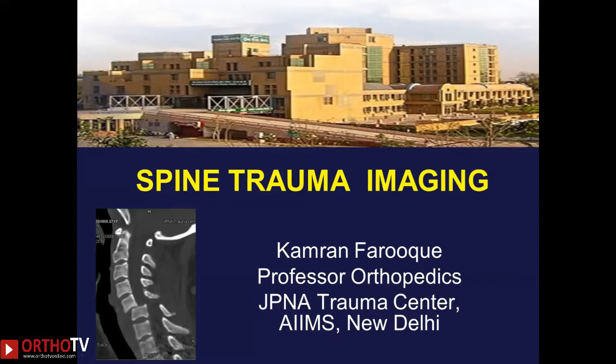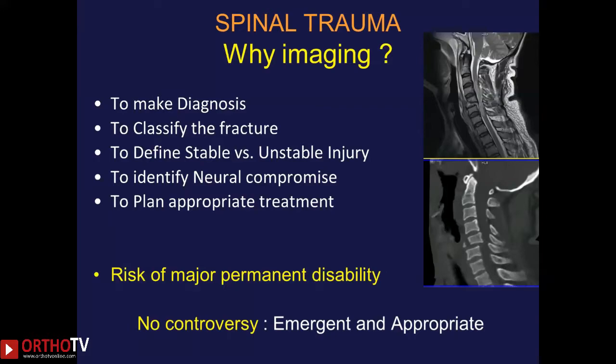Good morning. We're going to talk about spine trauma imaging today. The reasons why we need to image a patient with spine trauma are: firstly, to make the diagnosis and classify the fracture; to define whether the injury is stable or unstable; to pick up any neurological compromise; and finally, to plan the appropriate treatment. The risk of missing a spinal injury could be a major permanent disability and a catastrophe for the patient.